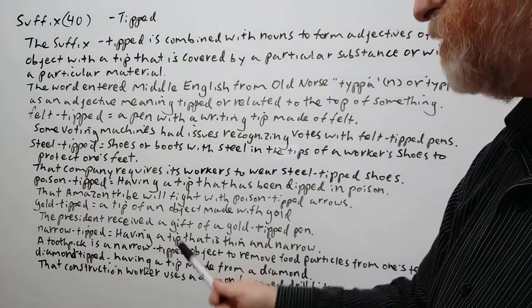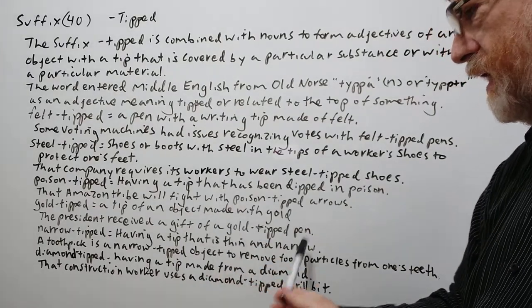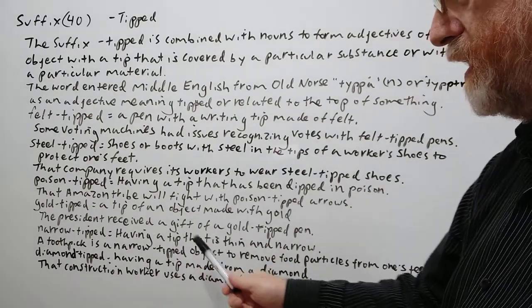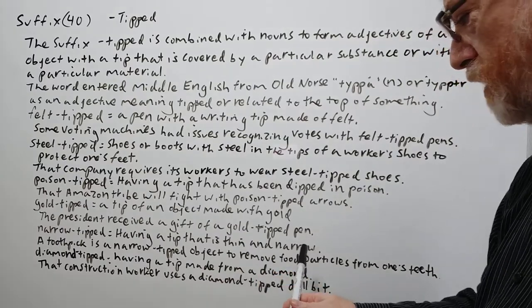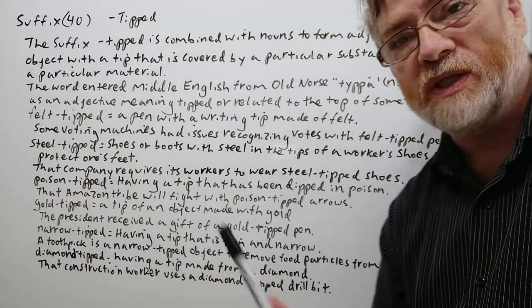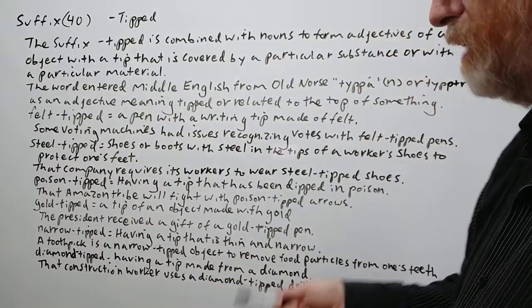The next one: narrow tipped, having a tip that is thin and narrow. A toothpick is a narrow tipped object to remove food particles from one's teeth.